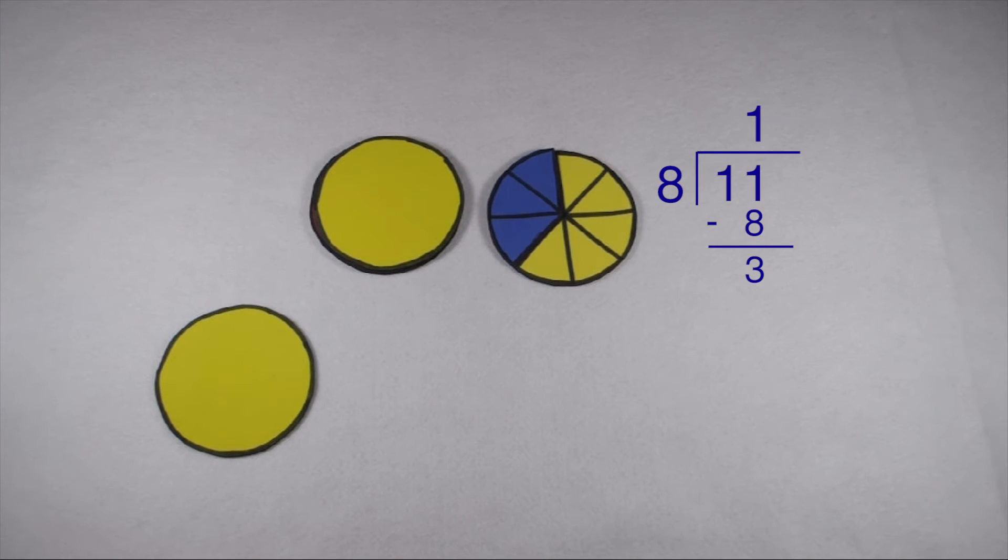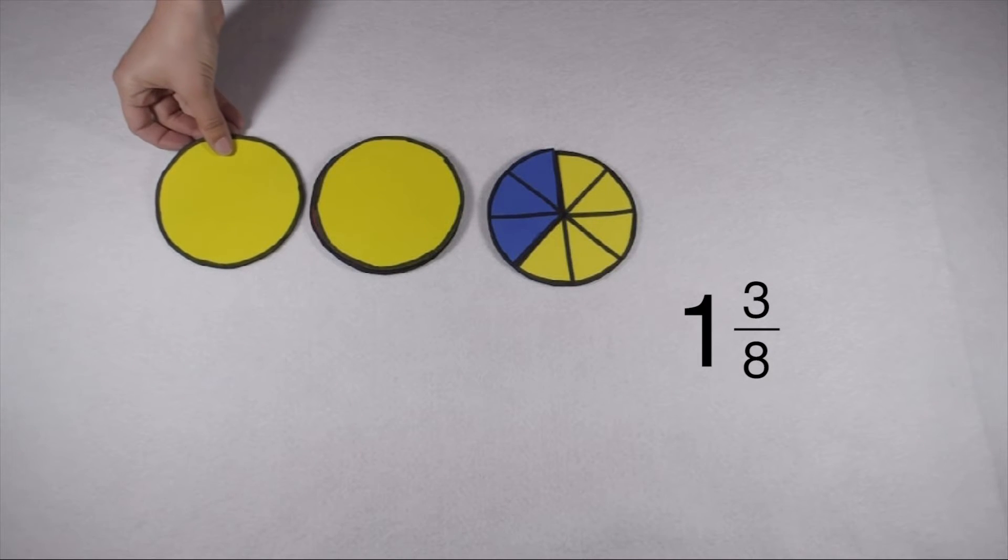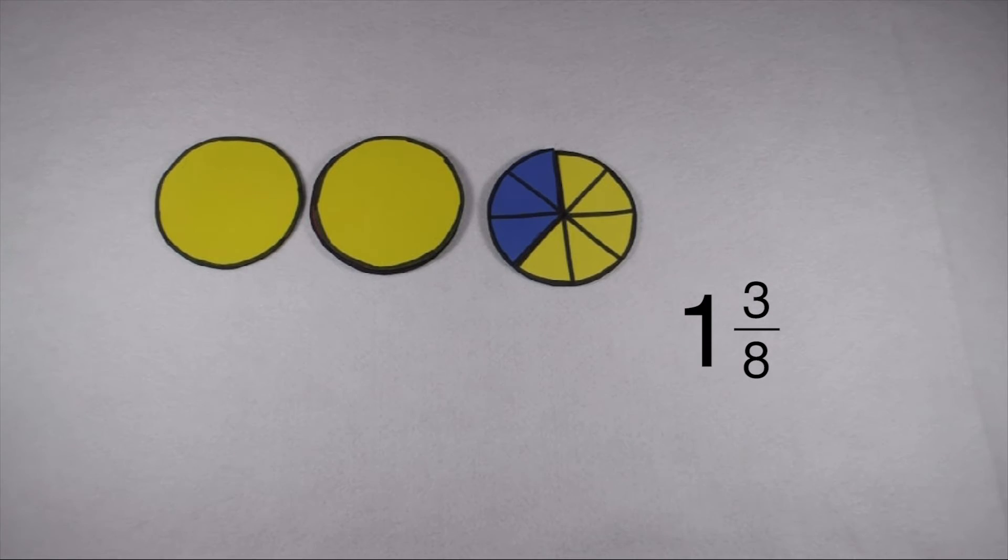So, 11 eighths is equivalent to 1 and 3 eighths, but I can't forget about the 1 whole I originally had in my sum. So, when I combine that back in, we wind up with a total of 2 and 3 eighths.